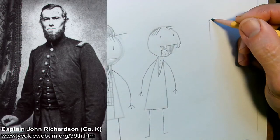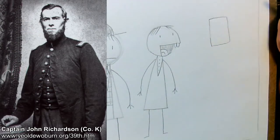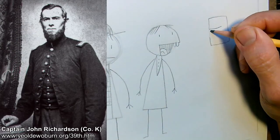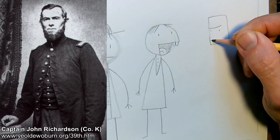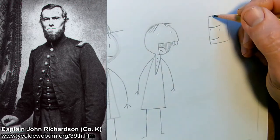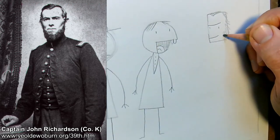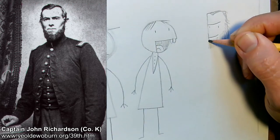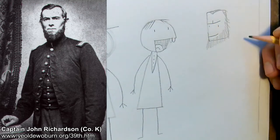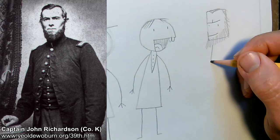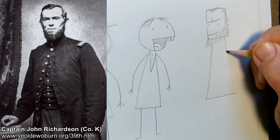Now this next guy we do have a photograph for. This is Captain Richardson of Company K. So I draw all the Massachusetts soldiers with squarish heads just to differentiate them from the New Hampshire guys. He's got a stern smile. We'll give him this chin beard like we see in the photo and maybe the same triangle body except he's wearing a captain's uniform.